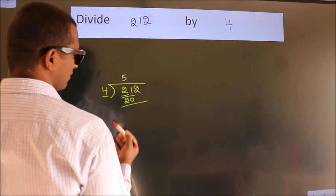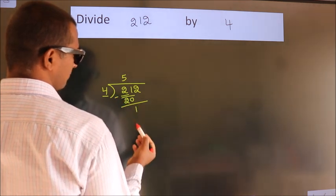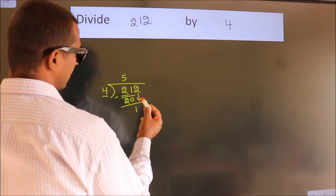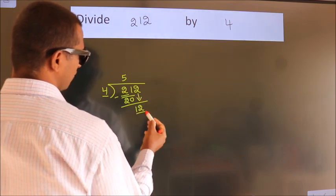Now we should subtract. We get 1. After this, bring down the beside number. So, 2 down. So, 12.